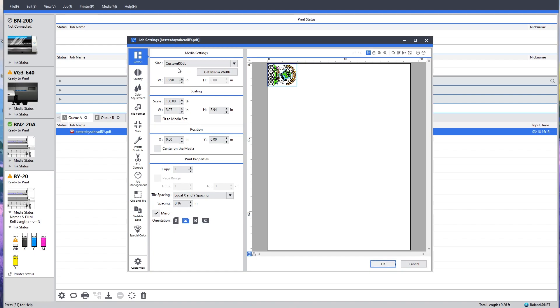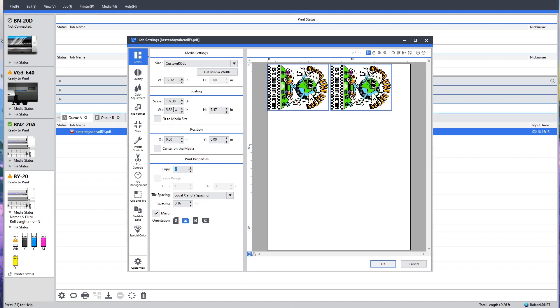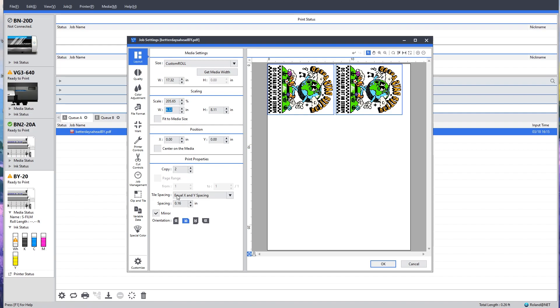Here is where I can do all of my job settings. I can get my media width first to ensure that I'm printing on the correct width, and then I can adjust the size if I want to. I can also change the copies, so I can do two of these and change the sizing. I can also change the orientation.